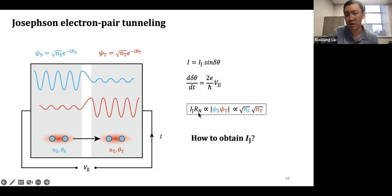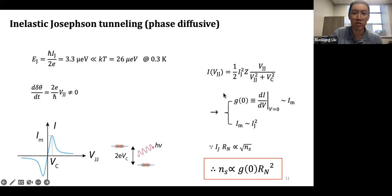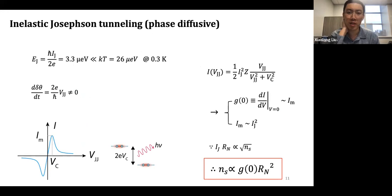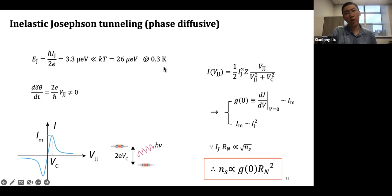If we can assume the scanning SJTM tip has uniform superfluid density, we can measure I_J and R_N to get n_s. R_N is readily measurable, but the key problem is how do we measure I_J. This comes down to how we model the Josephson junction: there are two regimes — the phase coherent regime and the phase diffusive regime — depending on how the thermal fluctuation k_BT compares with the Josephson energy E_J, which is proportional to I_J. In our case we do experiments at 300 mK, our niobium tip has an energy gap around 1 meV, and given a very small junction resistance of one MΩ, our maximum E_J is only 3 μeV, way smaller than k_BT at 300 mK. So we are really operating in the phase diffusive regime.